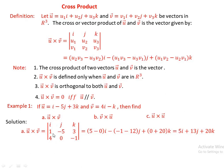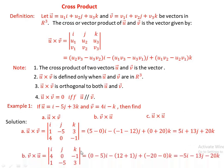This is evaluated as: determinant of [-5, 3; 0, -1]·i minus determinant of [1, 3; 4, -1]·j plus determinant of [1, -5; 4, 0]·k. This gives (5 minus 0)·i minus (-1 minus 12)·j plus (0 plus 20)·k, which is 5i plus 13j plus 20k.